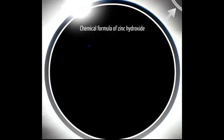We have zinc plus 2 and OH minus ion. These two ions are involved in the formation of zinc hydroxide. These two ions combine together to form the compound zinc hydroxide.